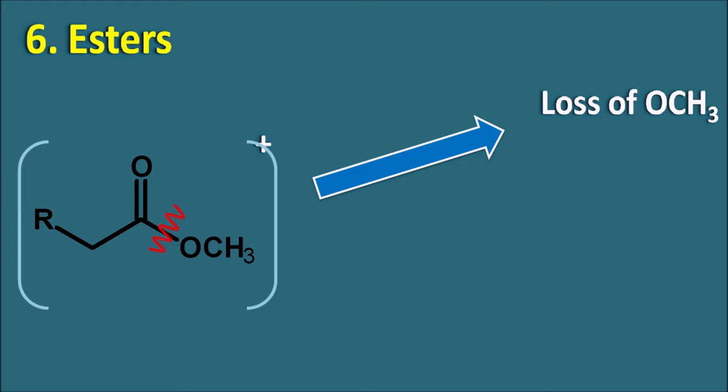Amines can undergo alpha cleavage to produce a fragment ion CH2NH2. The m/z value is 30 because CH2 is 14 and NH2 is 16. When the chain length is large, they can undergo loss of ammonia — NH2 and hydrogen are removed as ammonia, and they can undergo cyclization. This loss of ammonia is observed at the peak M-17, because nitrogen (14) plus three hydrogens (3) equals 17.